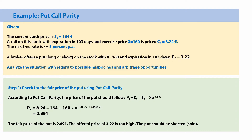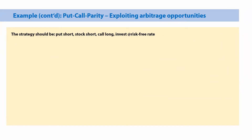Arbitrage means we will buy whatever is too cheap and sell whatever is too expensive. In this case, we will sell the put at a price of 3.22 — we will short it. What we would do is short the put, short the stock, buy the call, and invest at the risk-free rate. So let's see what happens in this case.